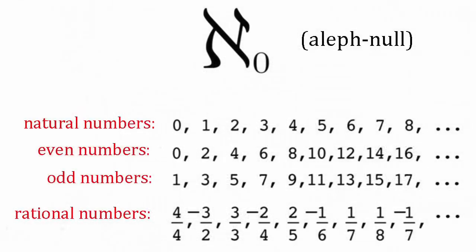Cantor realized that the well-known pairing-off principle used to tell if two finite sets are equal could also be applied to infinite sets. It followed that there really are just as many even positive integers as there are integers altogether. Far from being a paradox, he realized this was a defining property of infinite sets, that the whole is no bigger than the sum of its parts.